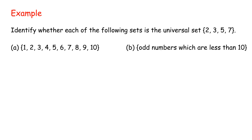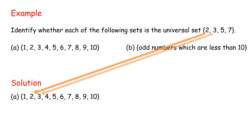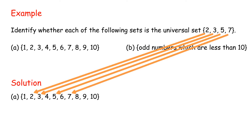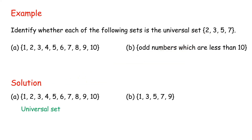Example: identify whether each of the following sets is the Universal Set given {2, 3, 5, 7}. Solution: A contains all the elements, thus it is the Universal Set. {3, 5, 7, 9} does not contain element 2, thus it is not a Universal Set.